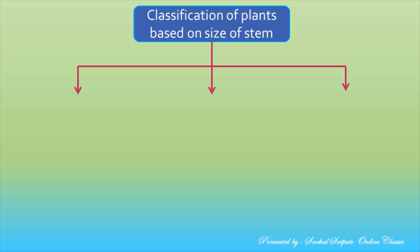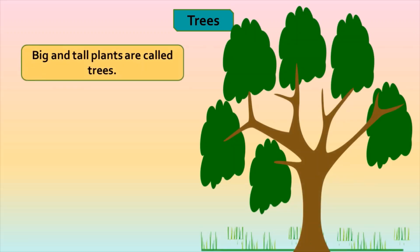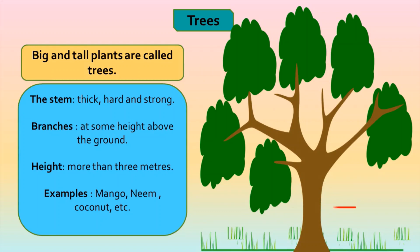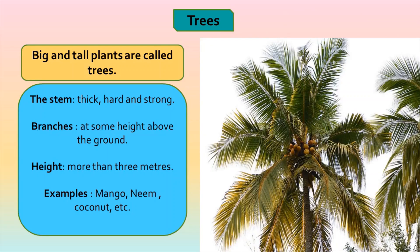Based on their size, plants are classified as trees, shrubs, and herbs. Trees: big and tall plants are called trees. Their stem is thick, hard, and strong — it is called the trunk. Trees have branches at some height much above the ground. Trees grow more than 3 meters and bear flowers and fruit for many years. For example, mango tree, neem tree, coconut tree, etc.